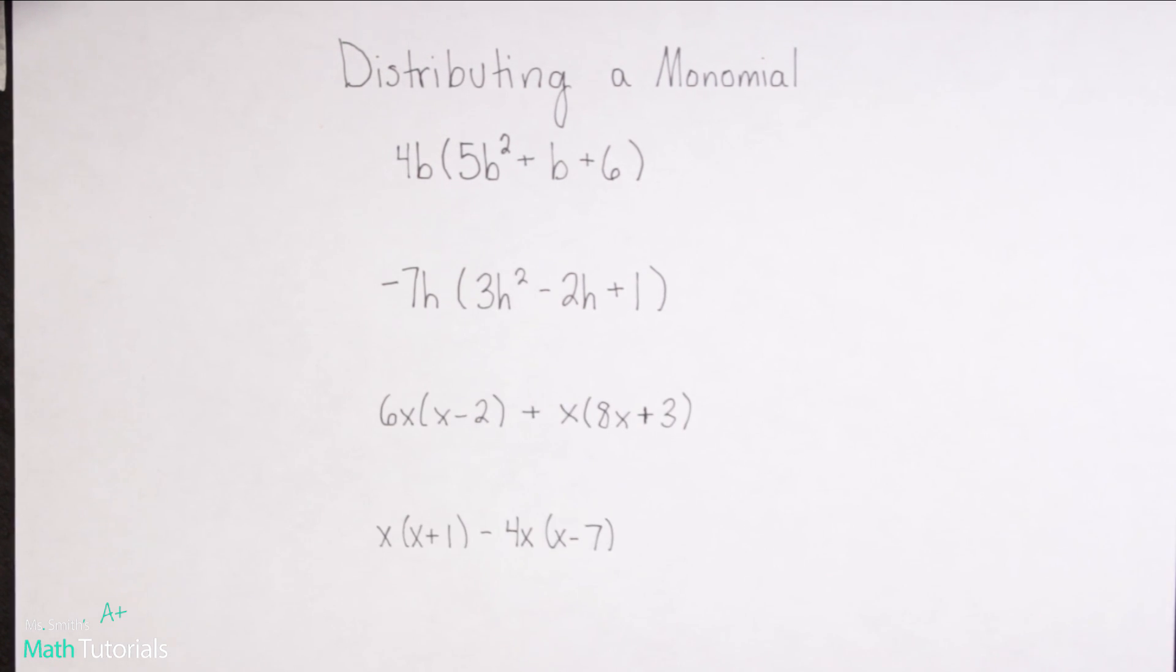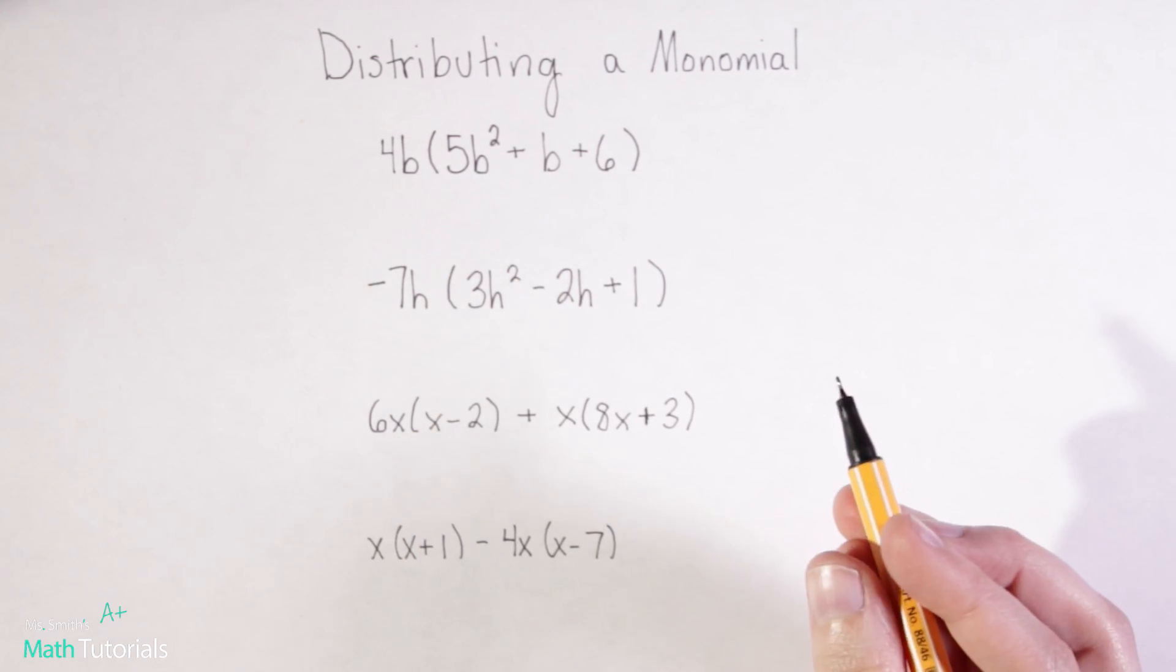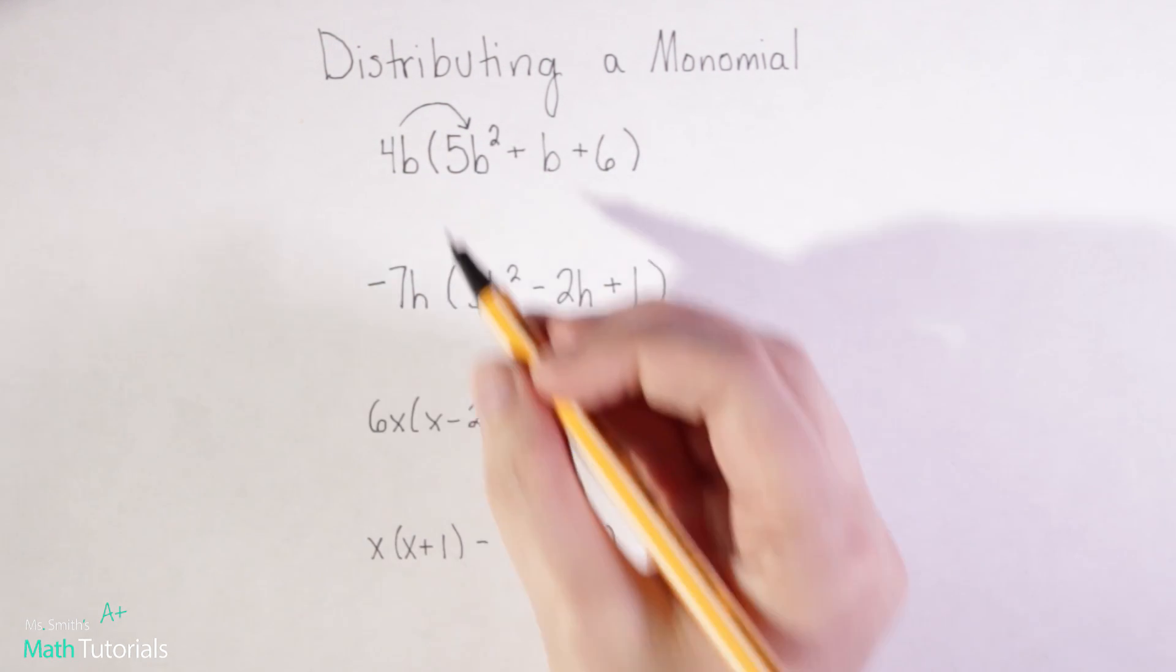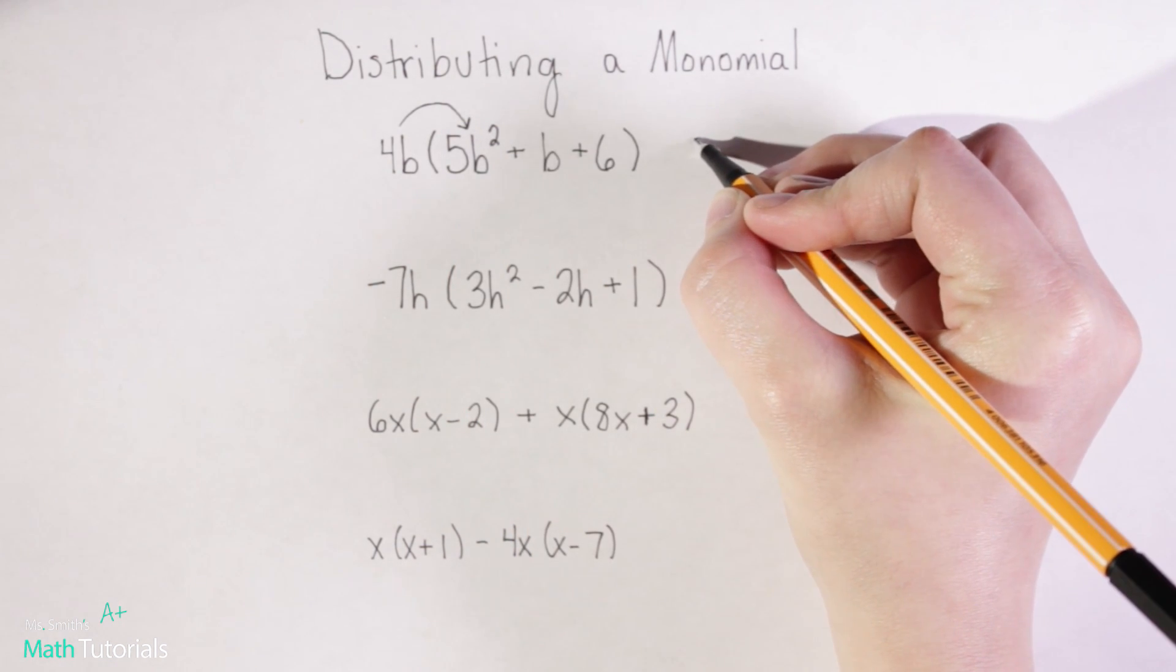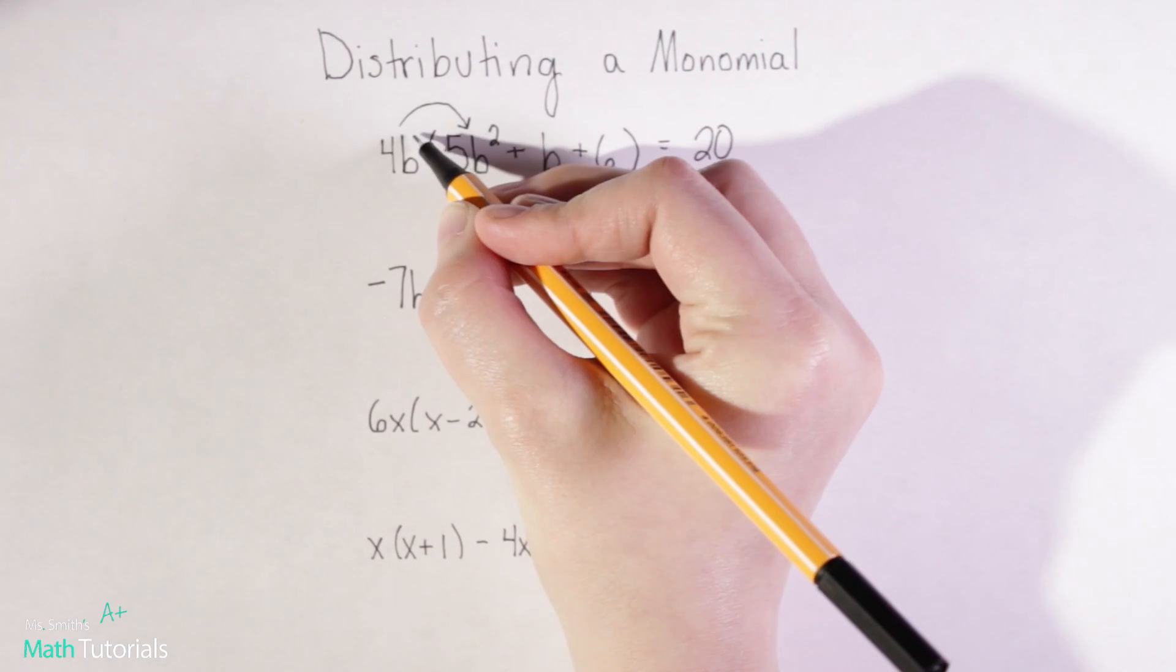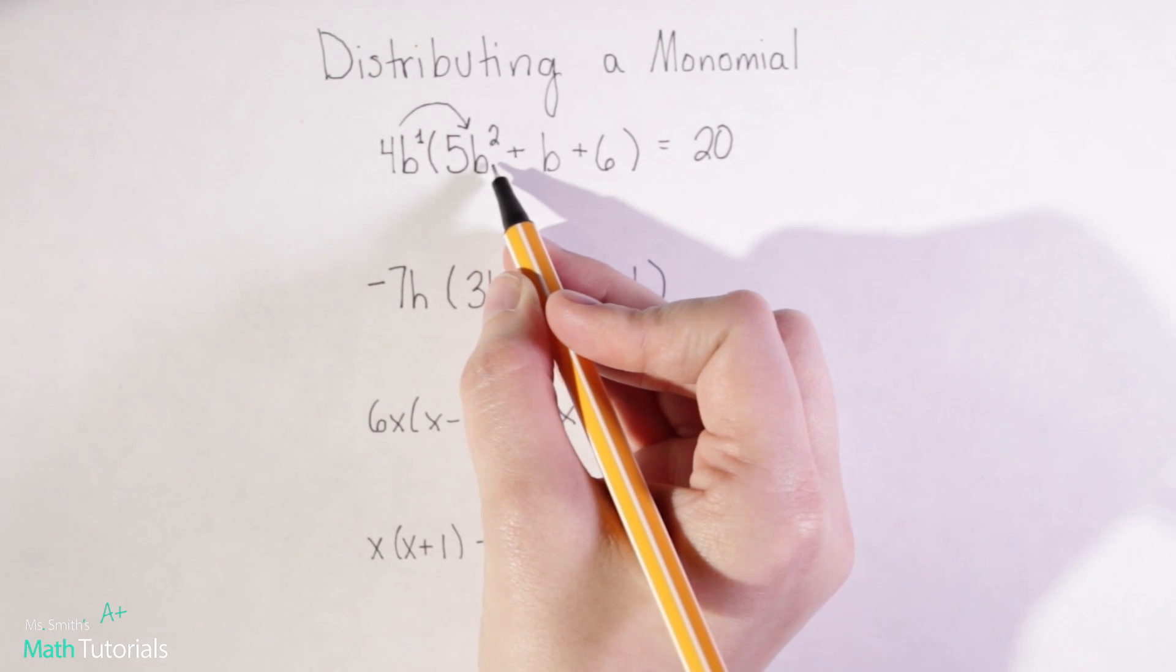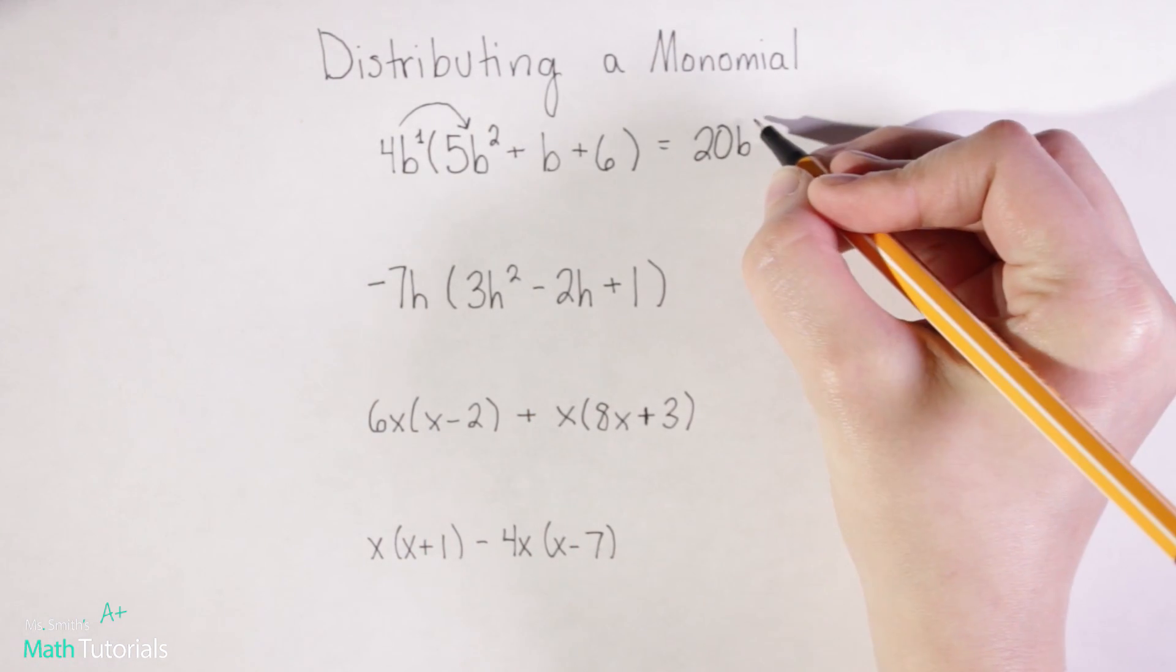So we'll start up here at the top. I see I have a set of parentheses and outside of it I have 4b, so I need to distribute this 4b into every part of the problem. So 4 times 5 would be 20, and then this b, remember that's b to the first, so it's b to the first times b to the second. Remember when we multiply straight across we add our exponents, so this would actually be b to the third.